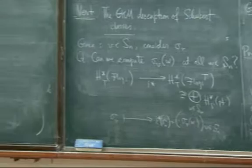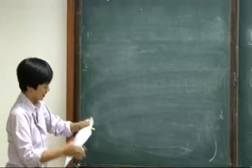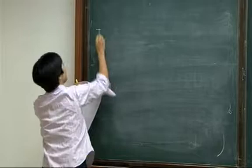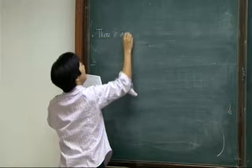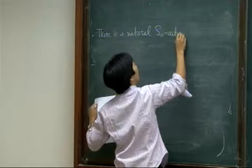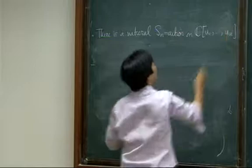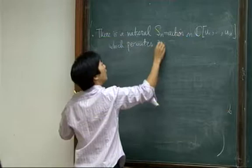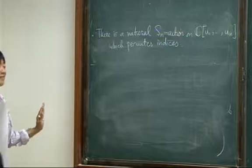Now finally, I think what I can only do is to write down the Billey formula, but we need to discuss examples next time. But just finally, to write down the Billey formula, one more thing I have to tell you is, so this is still preparation. So there is a natural SN action on this polynomial ring. And it's just given by permuting the indices on the variables.